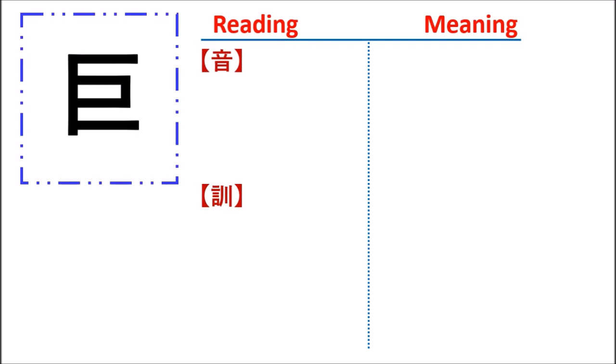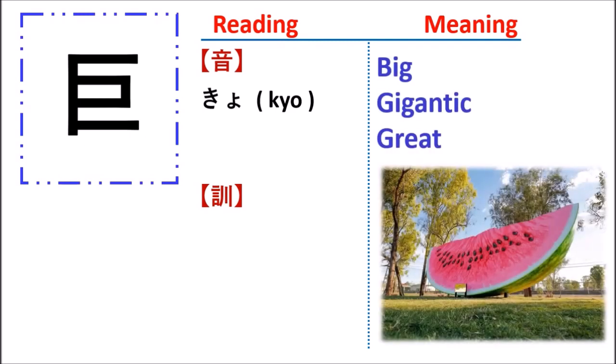So for the first kanji, we have Onyumi, the sound Kyo, which has the meaning of big, gigantic, or great.